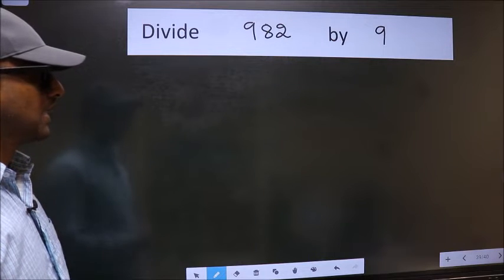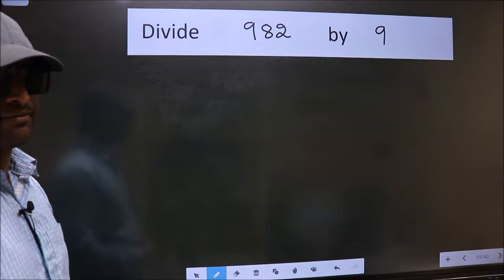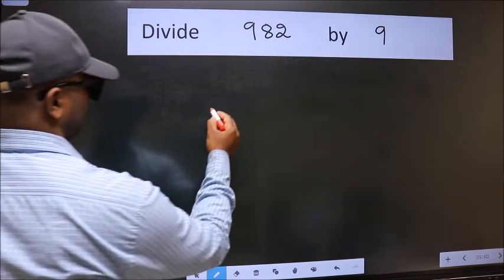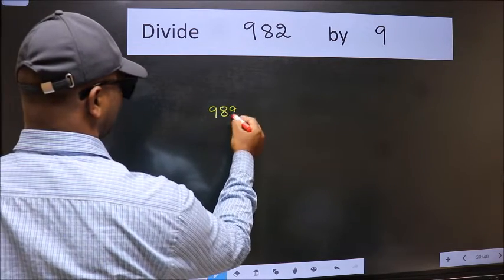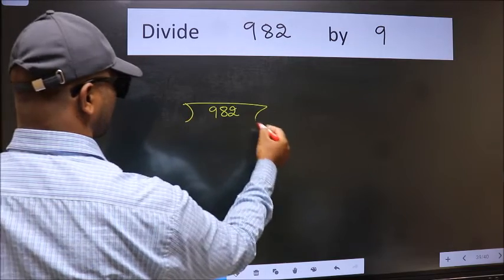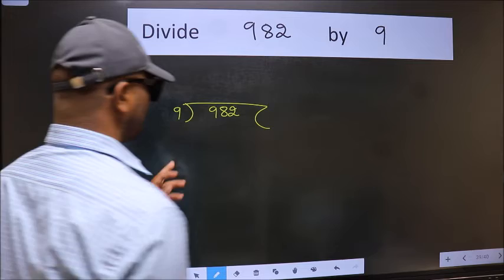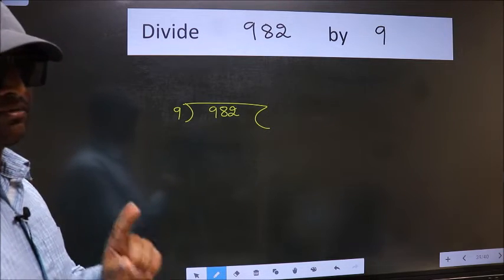Divide 982 by 9. To do this division, we should frame it in this way. 982 here and 9 here. This is your step 1.